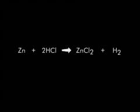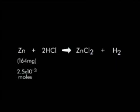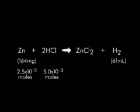For example, zinc metal reacts with hydrochloric acid to form zinc chloride and hydrogen gas. When 2.5 times 10 to the minus 3 moles of zinc is reacted with exactly twice as many moles of hydrochloric acid, the metal will react with the acid to yield both zinc chloride and 61 milliliters of hydrogen gas.